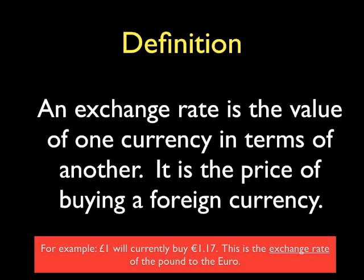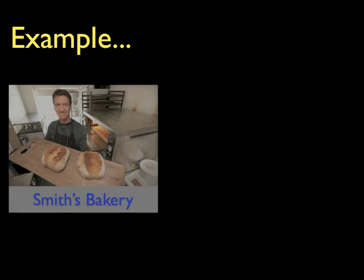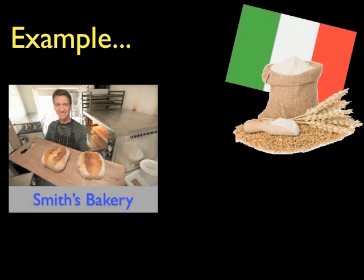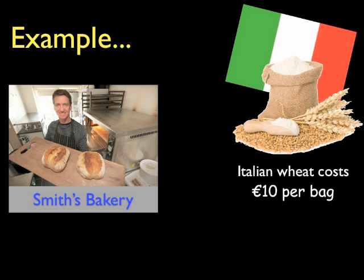Looking at an example on screen, today one pound will currently buy you €1.17. This is the exchange rate — the exchange rate of the pound to the Euro. Now let's have a look at an example of how exchange rates work and how they affect small businesses. Imagine Michael Smith, who owns a bakery in South Yorkshire — Smith's Bakery. Part of his product range is continental breads, and one of his raw materials is wheat, which he gets from an Italian supplier.